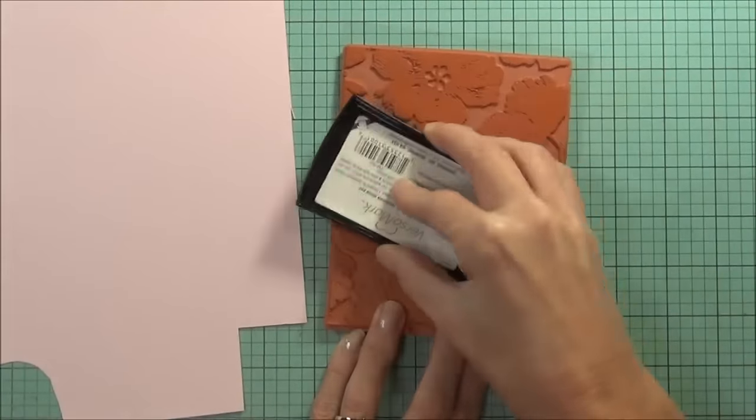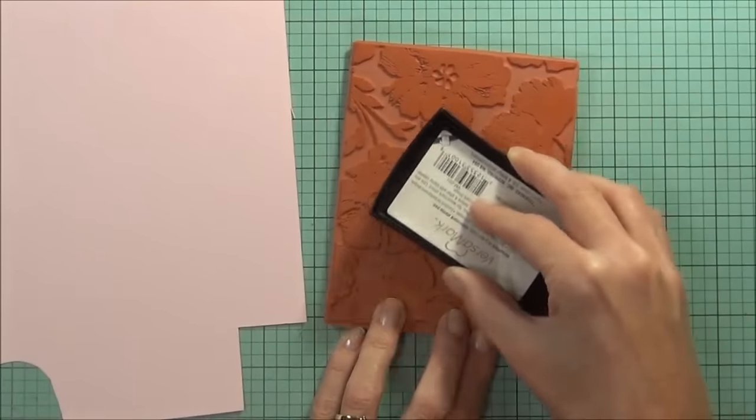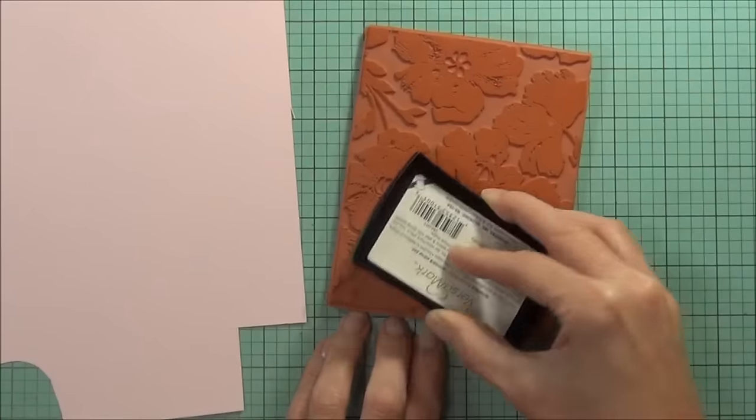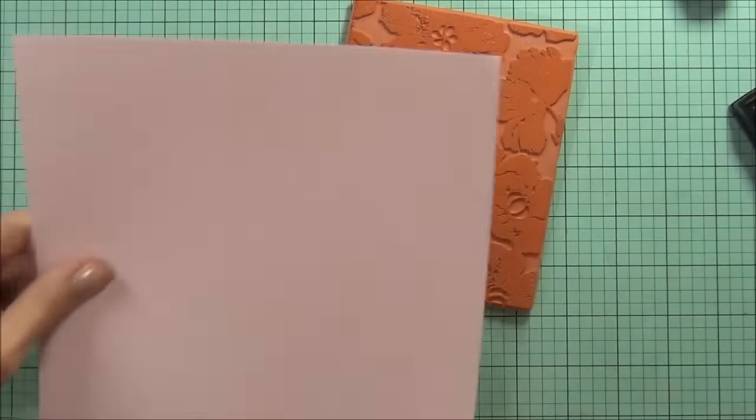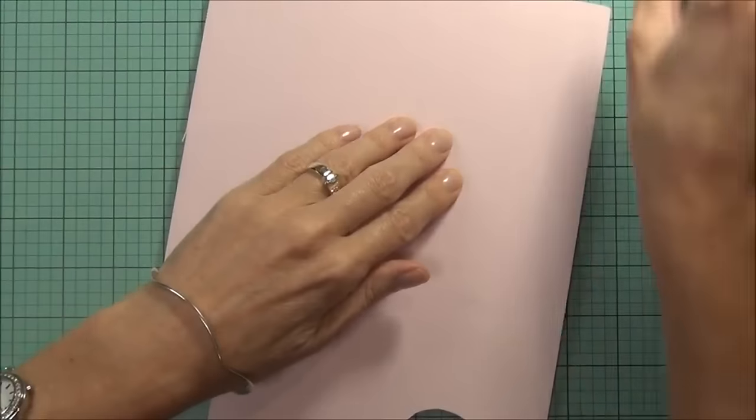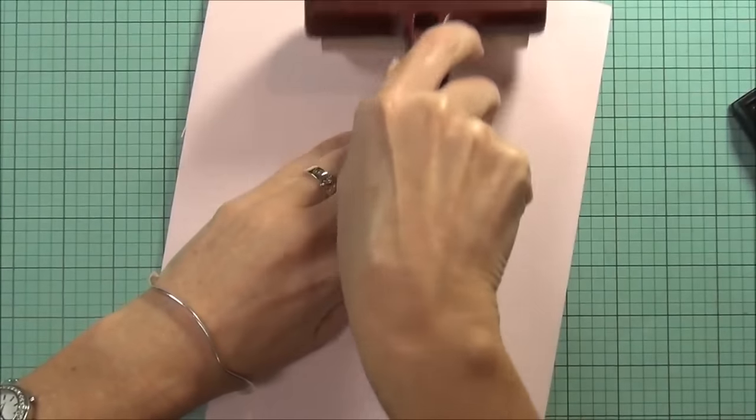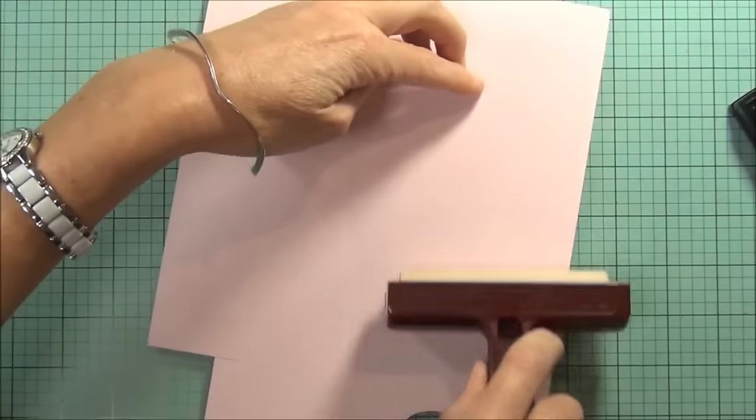I'm actually working on my work surface because it's such a large stamp. It's much easier to do this than try and mount it onto my stamp press or onto a block. I can just add the cardstock directly over top, and I like to use my brayer to make sure that I get a good impression on the large stamps.